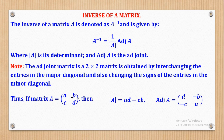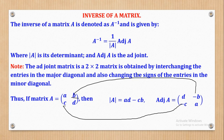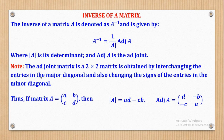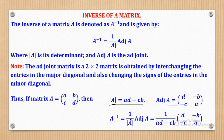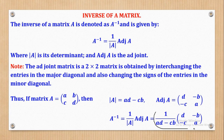Changing the signs means that if this B was positive, you make it negative, and if it was negative, you make it positive. This B is positive, so we put a negative here, and this C was positive, so we put a negative there. That is what they mean by changing signs of entries in the minor diagonal, and basically that is the adjoint of a matrix. Now that we know determinant and adjoint, the inverse of matrix A is given by 1 over the determinant multiplied by the adjoint matrix.